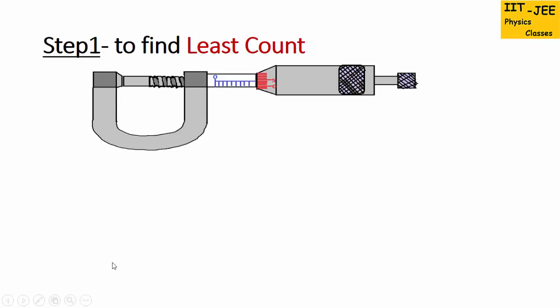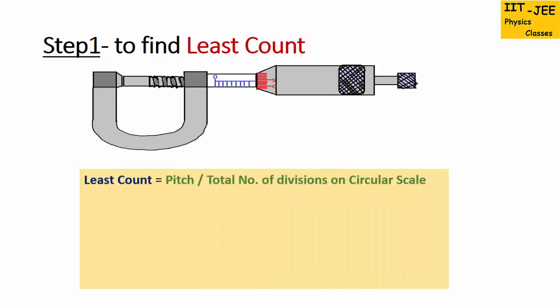Step 1: find least count. We have discussed finding least count of screw gauge in detail in part 1. The same way we will use the formula to find least count, that is pitch over total number of divisions on the circular scale. Pitch is called the least count of the main scale. This scale is the main scale, sometimes also called the linear scale because it is a horizontal scale. So least count of linear scale or main scale means the length of 1 division, which is 1 mm.